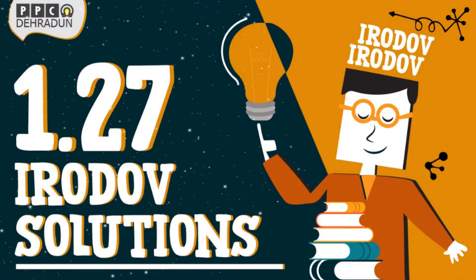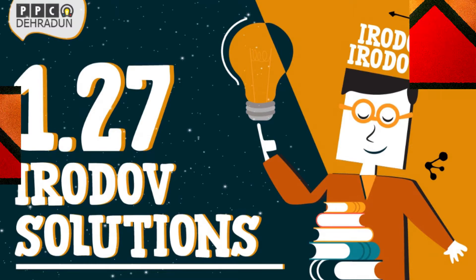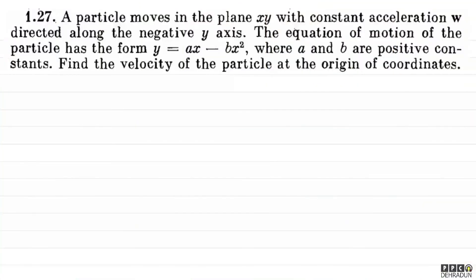Hello everyone, I am Sakhir Bajpayee, Director of Kriyas Physics Classes, Dehradun. Welcome students. Let us have a look at this beautiful question from Irodov. The question says: a particle moves in the plane xy with constant acceleration w vector directed along the negative y-axis. The equation of motion of the particle has the form y = ax - bx², where a and b are positive constants. Find the velocity of the particle at the origin of coordinates.